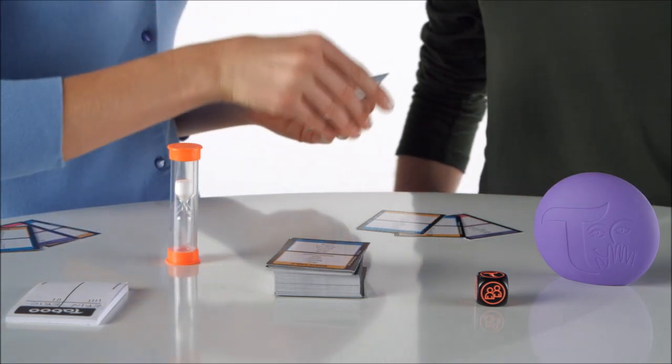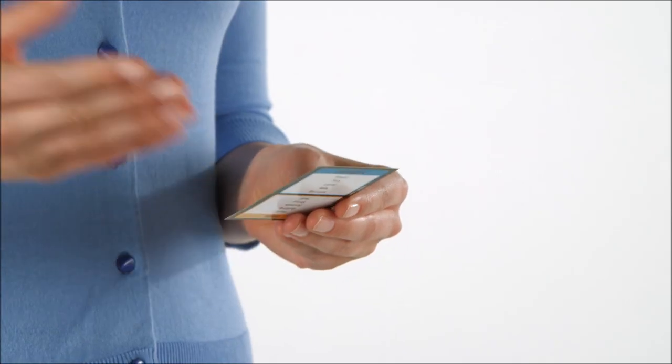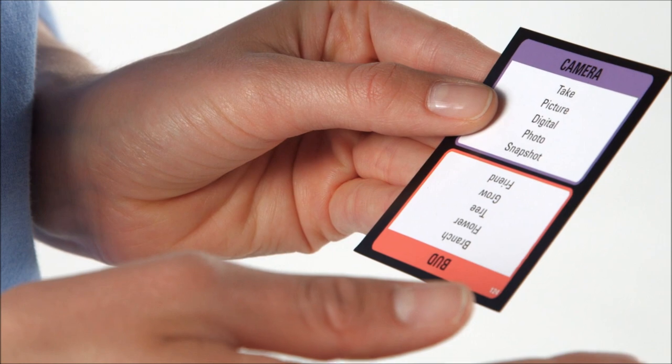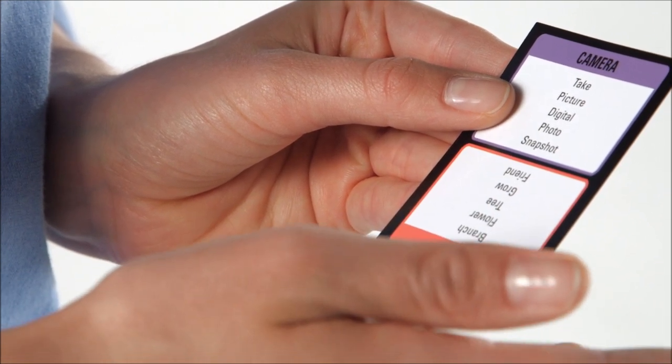One player then begins describing the clue found on the card, trying to get their teammates to guess. That player can say anything except the taboo words listed on the card.